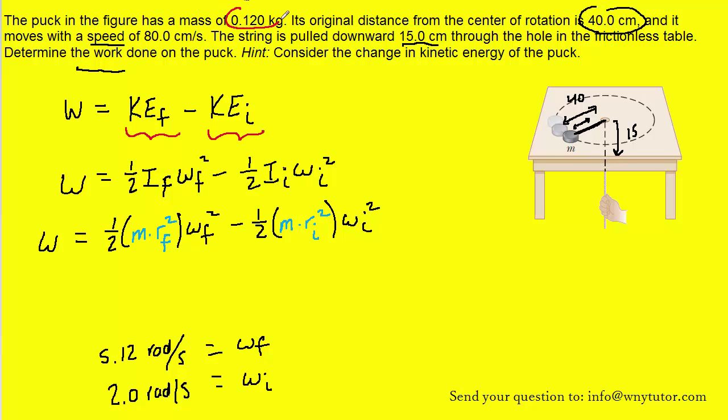Note that the mass was given to us as .12 kilograms. We had already figured out the final angular speed and the initial angular speed. And then the radii were mentioned earlier. Just be sure that you plug in meters here for the radii. Recall that the final radius was 25 centimeters, but we're going to have to use the standard unit of .25 meters. And then the initial radius was 40 centimeters, but we're again going to use the standard unit of meters, so that will become .4 meters.